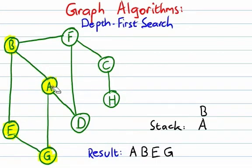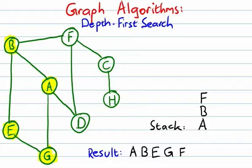Now from B, we've already visited A and E, so that leaves us with F. The next vertex we're going to visit is F. We push it onto the stack, visit it, and mark it as visited.